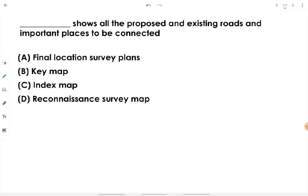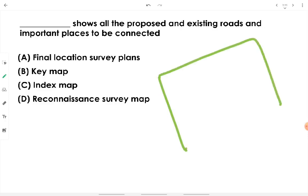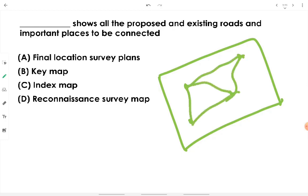A key map shows all the proposed and existing roads and important places to be connected. It displays all existing roads available in the given area and the important points which are to be connected — for example, points A, B, C, D connected by roads, showing existing roads and the remaining places meant to be connected in the new road construction project.